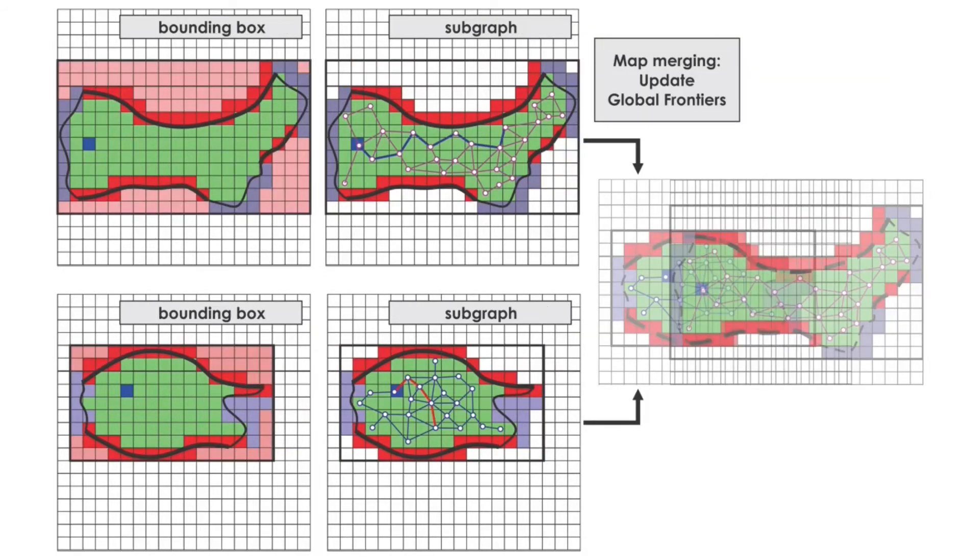At the central computational hub, map merging and alignment is iteratively performed. Each submap's frontier point, and accordingly frontier voxel, in the global frame is compared with the state of the global map at that point.